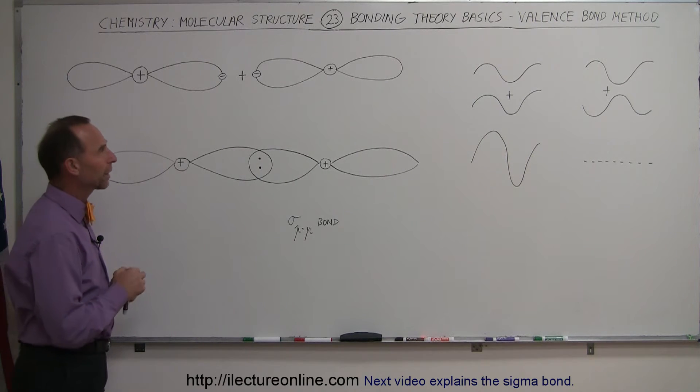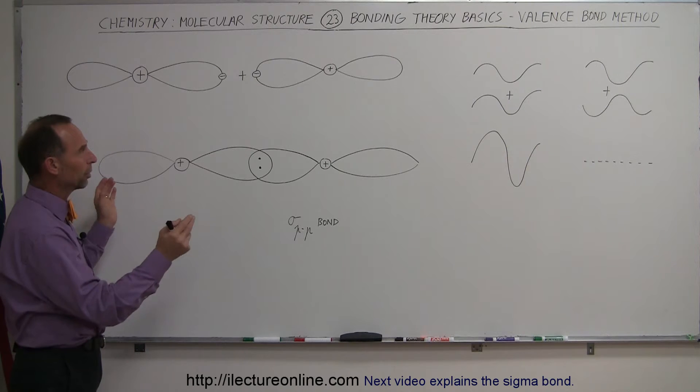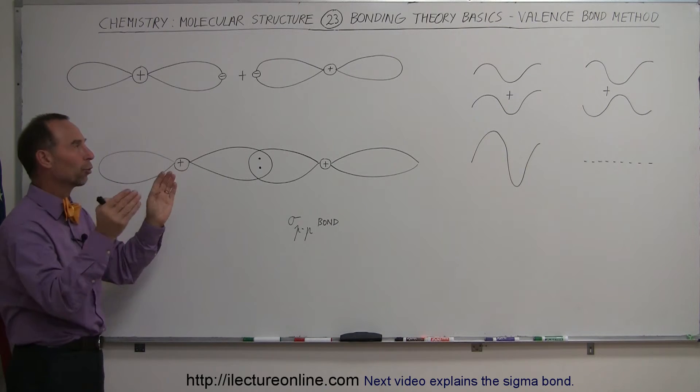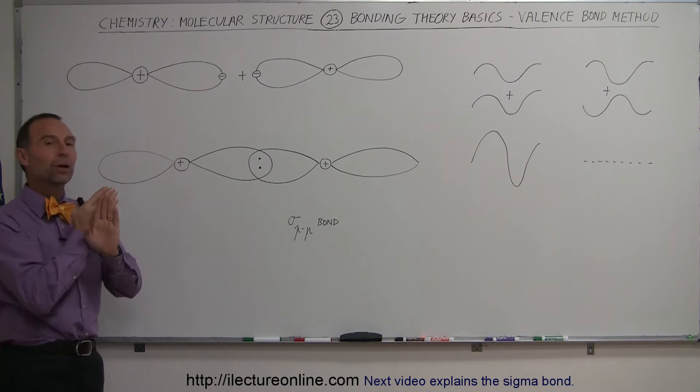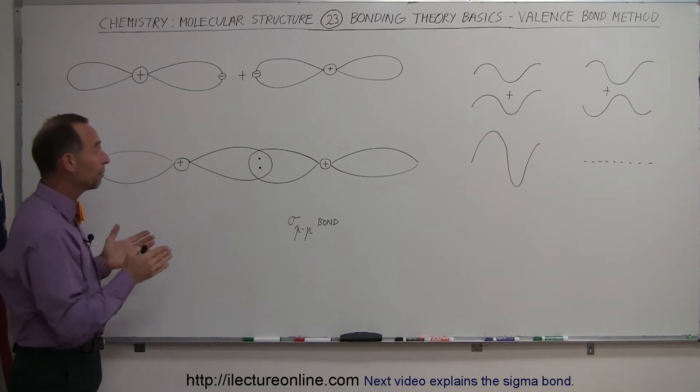We're now going to take a look at atoms that have p orbitals, just like with the hydrogen atom that has an s orbital and the s orbitals can overlap so that the single electrons in each s orbital can share that space where they overlap and form a higher energy density. We can do the exact same with p orbitals.